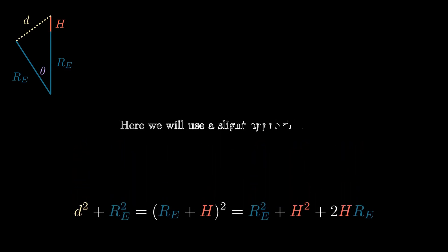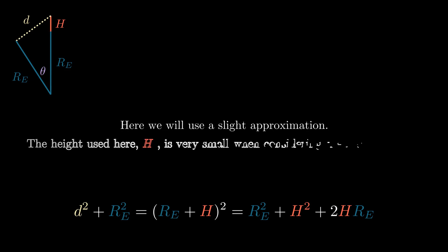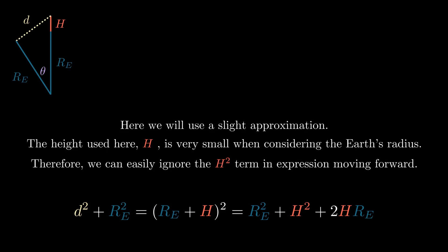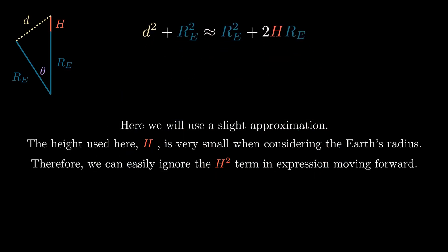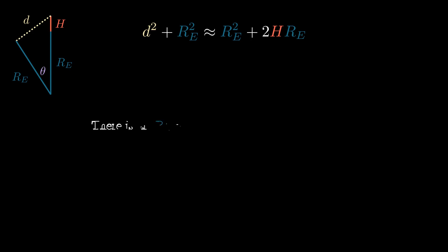Here we will use a slight approximation. The height h in this problem is very small when compared to the radius of the earth. Therefore, we can ignore the h squared term moving forward. There is an RE squared term on both sides of our equation, so we can cancel them, leaving d squared equal to approximately 2hRE.